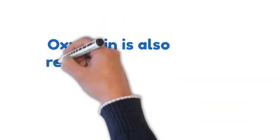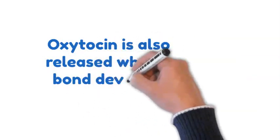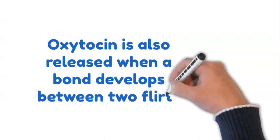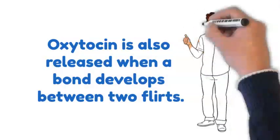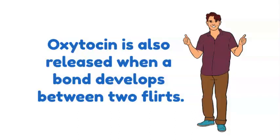As you may have figured, oxytocin, our old friend, is also released when a bond develops between two flirts. When this happens to you, well, you're in luck. It might be the beginning of a good relationship.